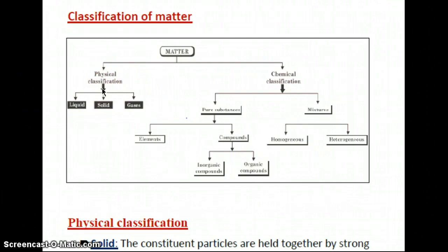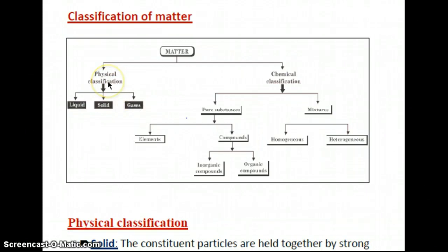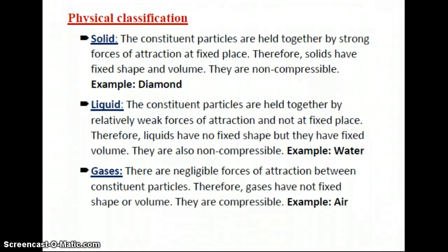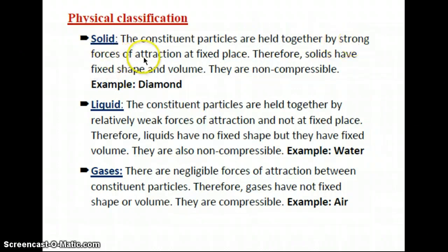Physical classification is based on the physical state of matter, and we already learned in lower standards that there are mainly three states of matter: solid, liquid, and gases. In physical classification, there are three types. I know you have already learned this, but let us quickly revise. In physical classification, the first type is solid.